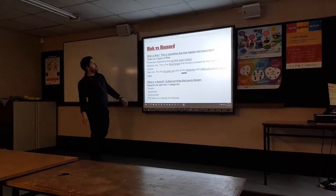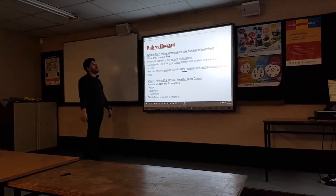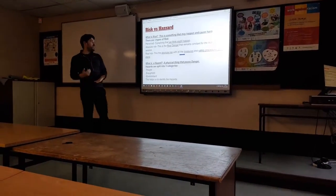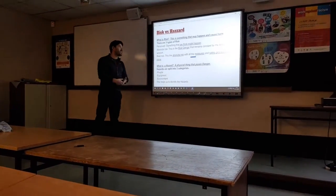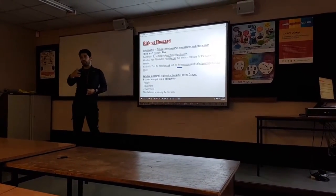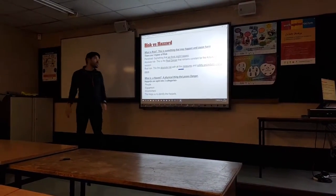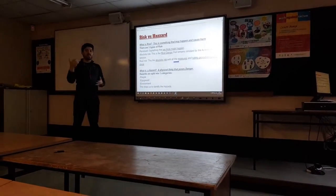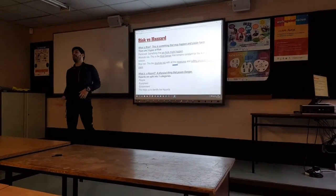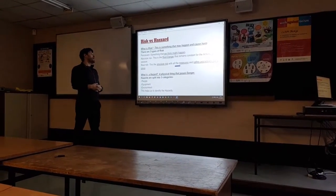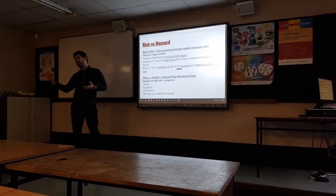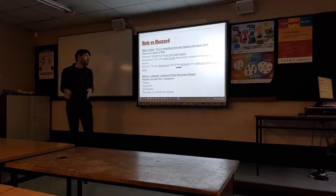First of all, risk versus hazard. What is a risk? Something that may happen or cause harm. There are three types of risks: perceived, absolute, and real. Perceived is something that we think might happen, something in our imagination. Absolute is the real danger — the cliff edge in Dr. Brian. The real risk is the absolute risk with measures and safety procedures put in place, like ropes and harnesses.